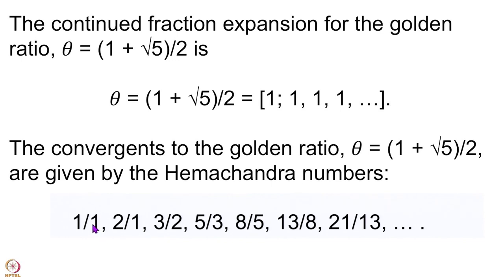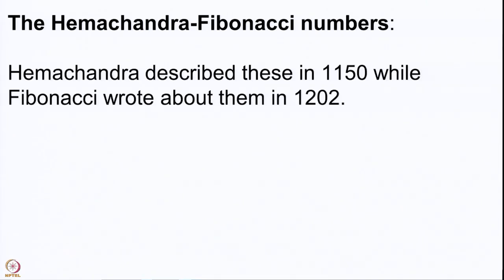This sequence of numbers 1, 2, 3, 5, 8, 13, 21, 34, and so on are what are commonly known as the Fibonacci numbers. But as we saw in the last lecture, these were described by Hemachandra in 1150, more than 50 years before Fibonacci actually wrote about them. Fibonacci's account of these numbers is in 1202.